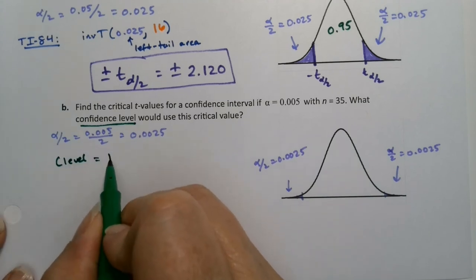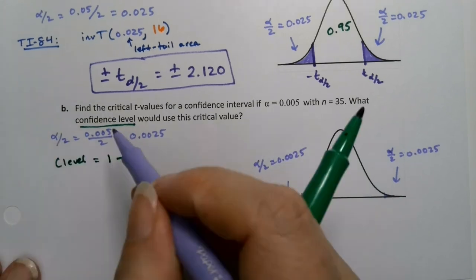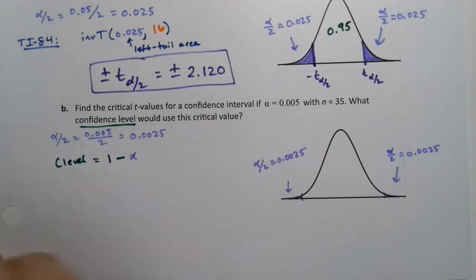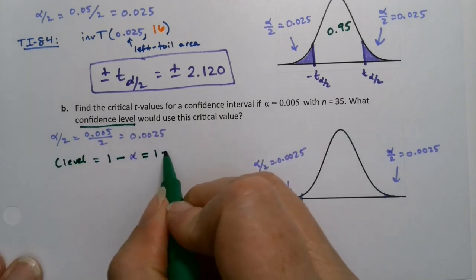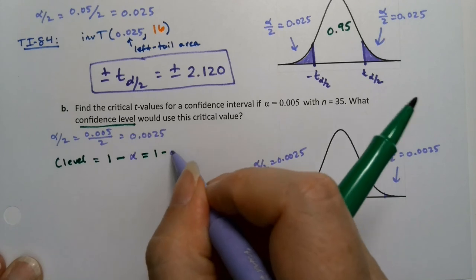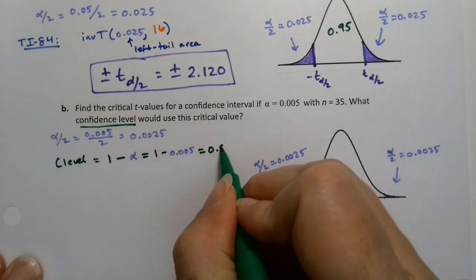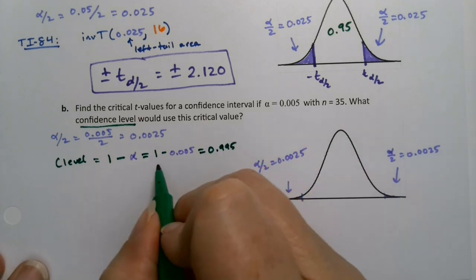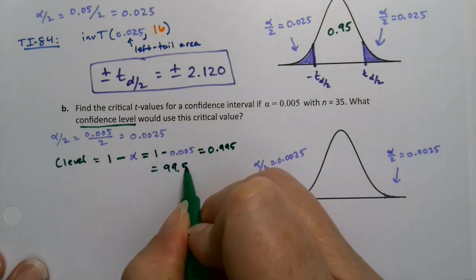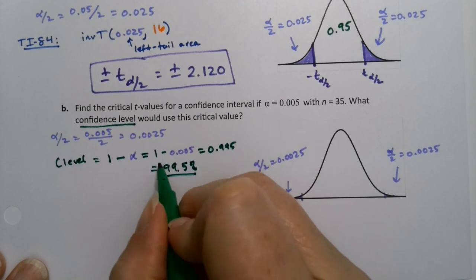So it would be 1 minus your alpha, which would be 1 minus 0.005, which would be 0.995.